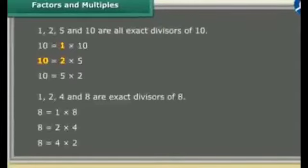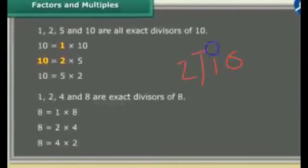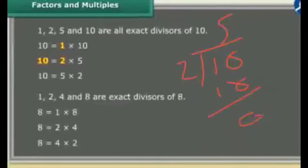1 into 10, we get 10. 2 is 5 times. 5 is 2 times. If we divide 10 by 2, then 2 fives are 10, remainder is 0.